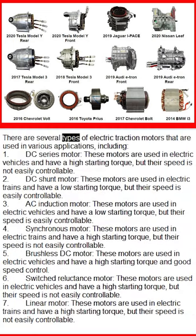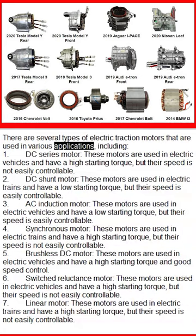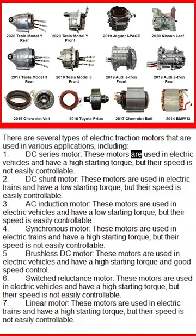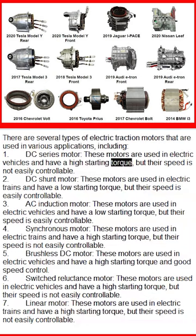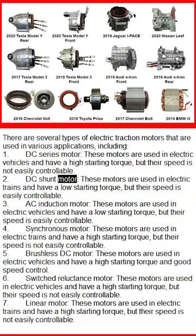There are several types of electric traction motors used in various applications. First, the DC series motor: these motors are used in electric vehicles and have a high starting torque, but their speed is not easily controllable. Second, the DC shunt motor: